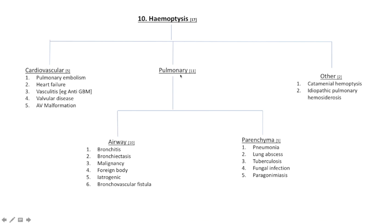Going into pulmonary, we divide this into airway versus parenchyma. For airway causes: bronchitis can cause it, bronchiectasis — especially in a history of previous respiratory tract illness, notably things like pertussis and TB — malignancy, which is a very important cause, foreign body aspiration, iatrogenic issues, and bronchovascular fistula.